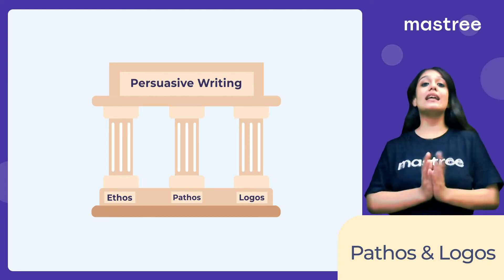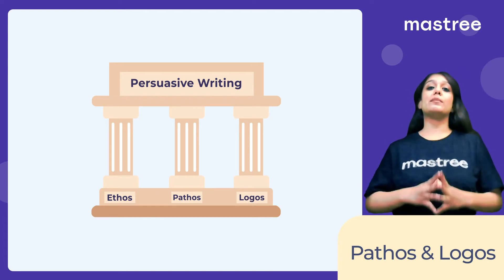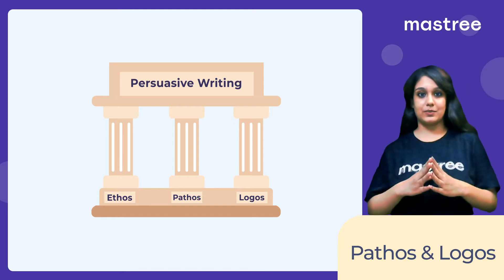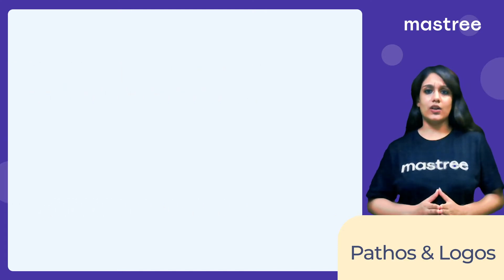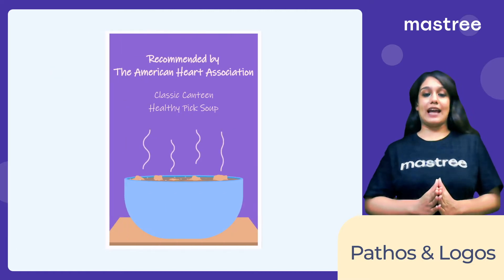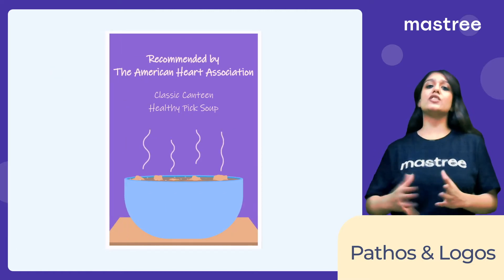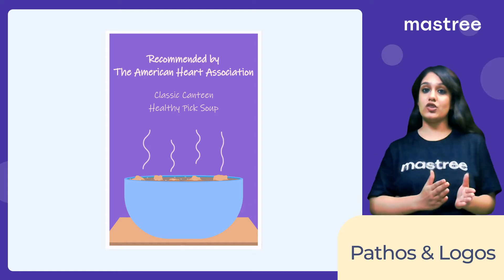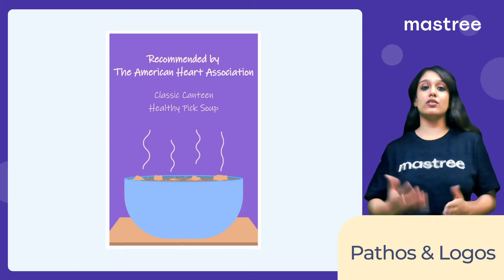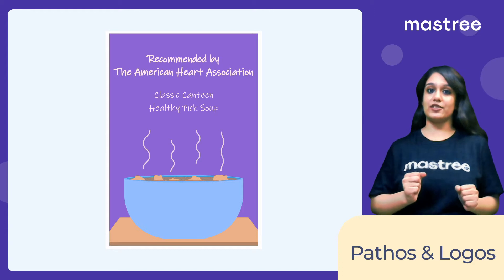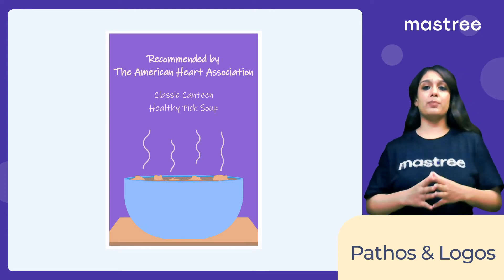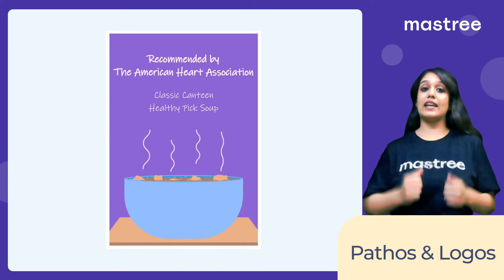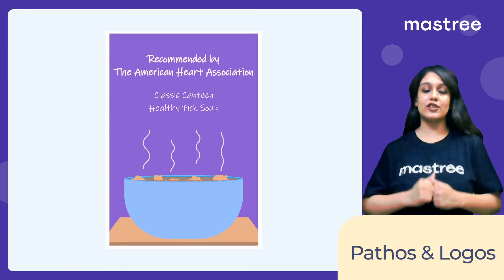Ethos is that part of our writing where we build trust in our audience by using expertise or experience. Revisiting Ethos, look at this poster of an ad. It mentions that the soup is recommended by the American Heart Association, which is an organization that specializes in heart research. By adding this to the poster, it gives the audience trust in the product and they are now more convinced to buy this soup.